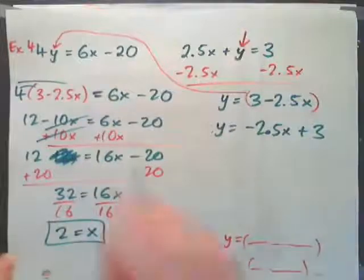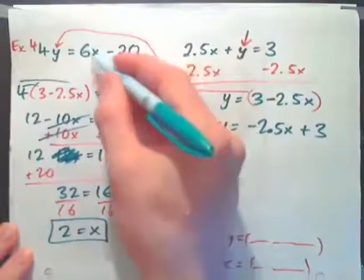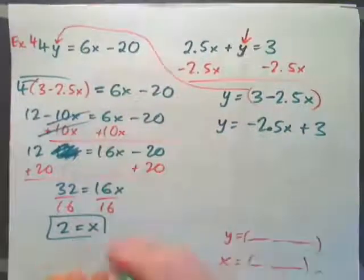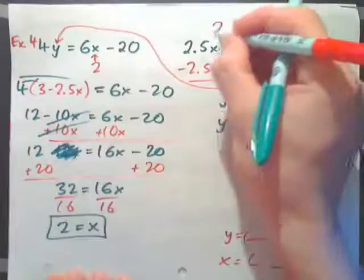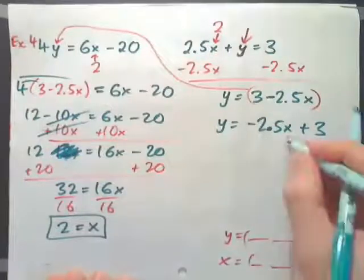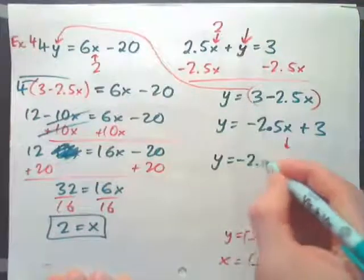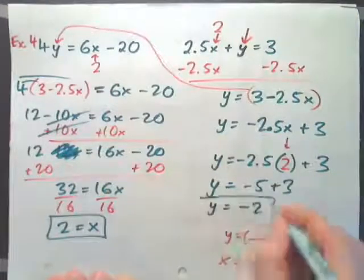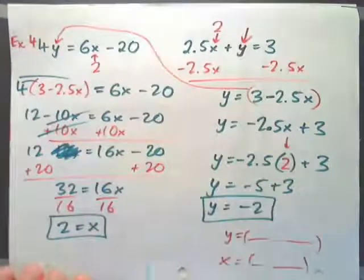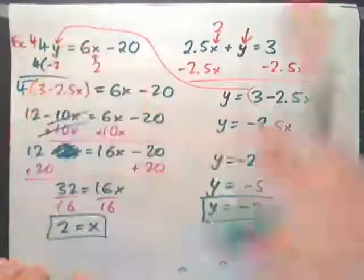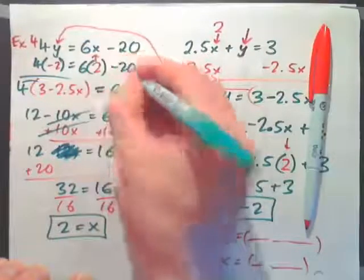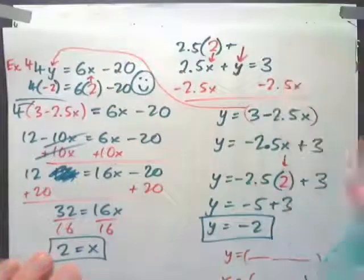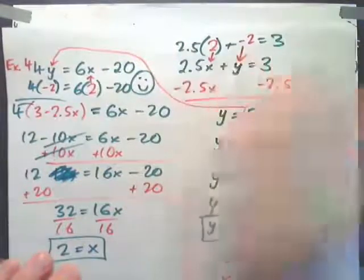We found x equals 2, but we still need y. The easiest equation to use is y equals negative 2.5x plus 3 — plug in 2: y equals negative 2.5 times 2 plus 3, which is negative 5 plus 3, so y equals negative 2. We can verify: 4 times negative 2 equals negative 8, and 6 times 2 minus 20 equals 12 minus 20 equals negative 8. Also, 2.5 times 2 plus negative 2 equals 5 minus 2 equals 3. Both equations check out.